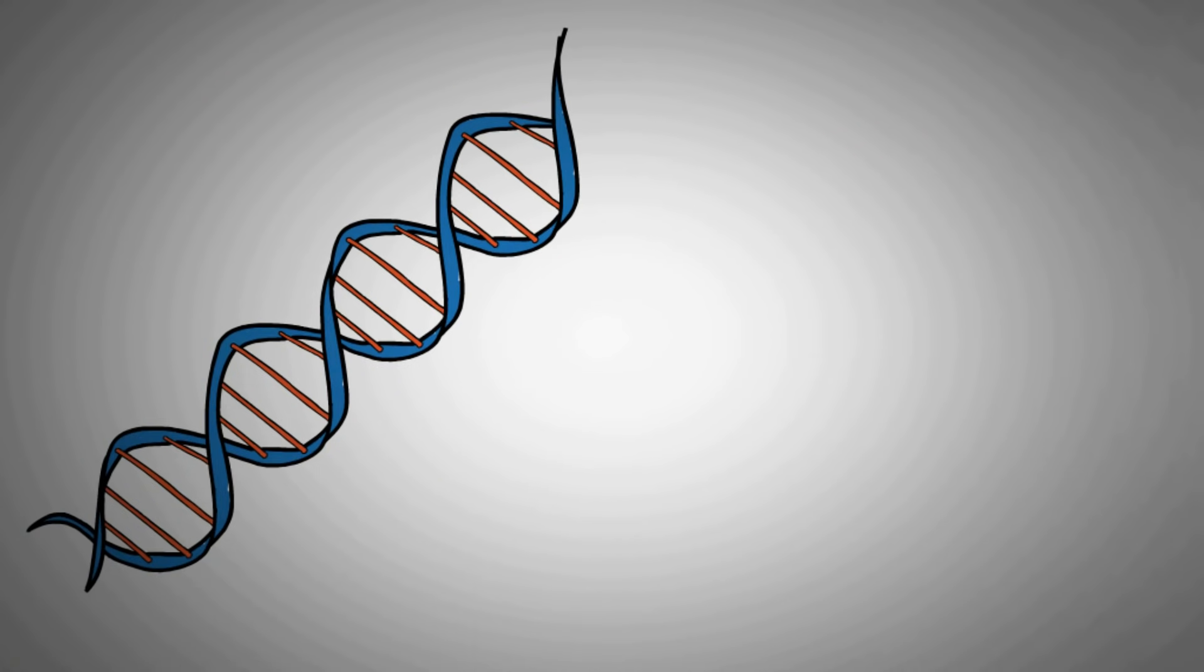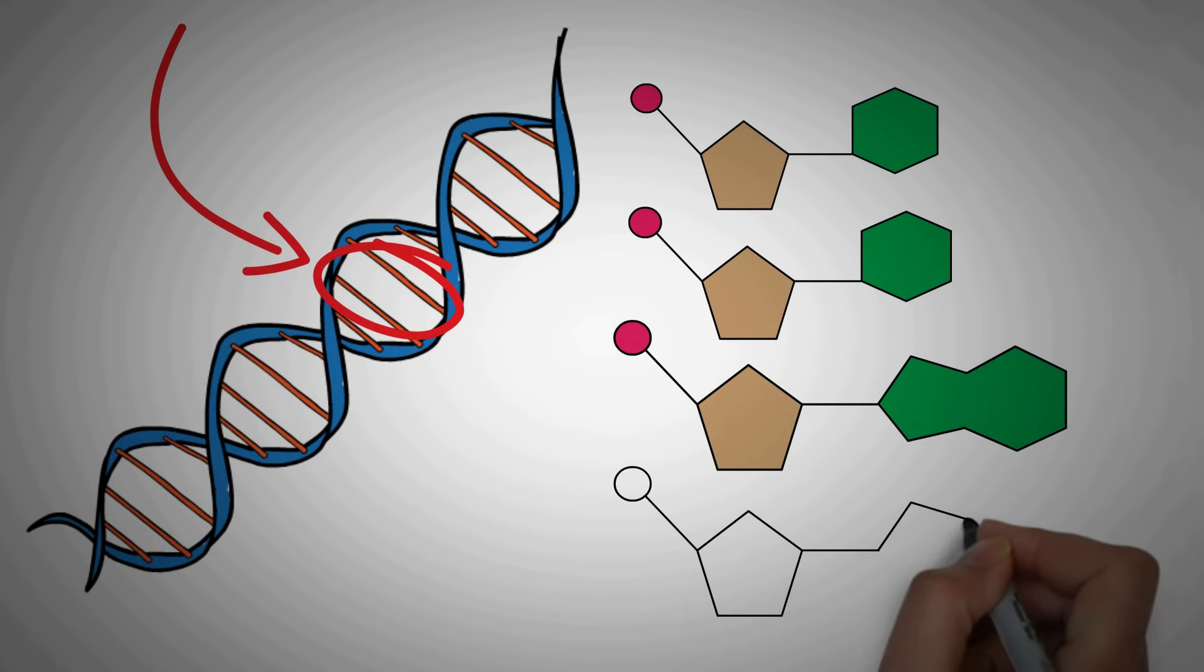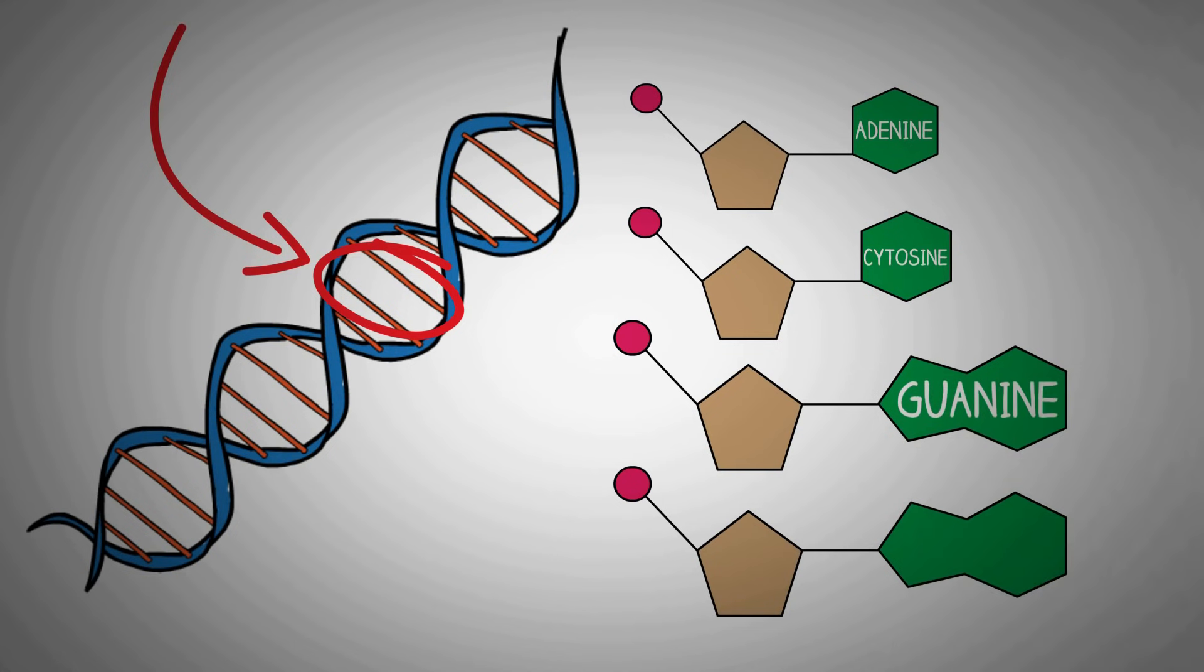Now assuming you have watched the videos on structure of nucleic acids and DNA, you know that the information of the genetic code is stored in the form of base pairs, with four main bases: adenine, guanine, cytosine and thymine. In RNA, we have uracil in place of thymine.